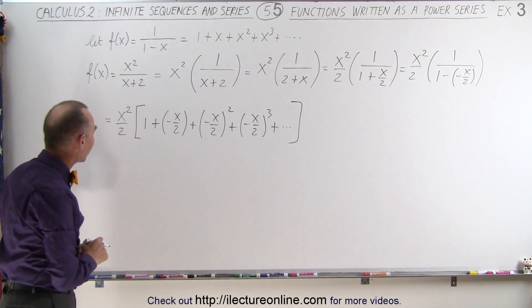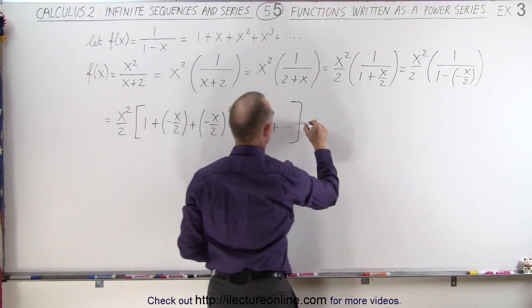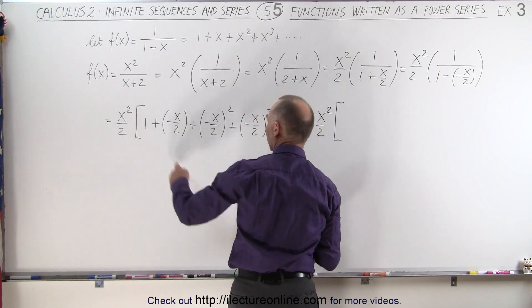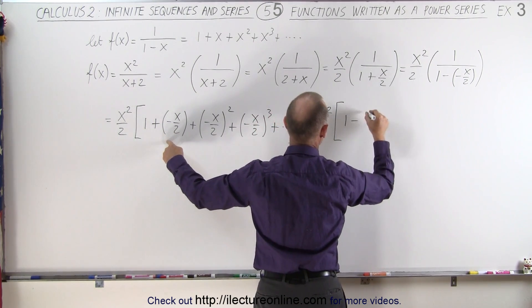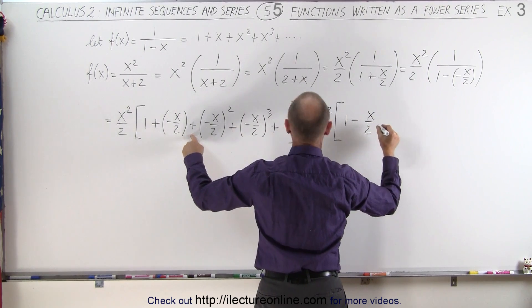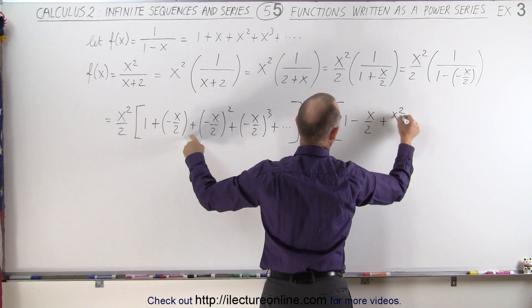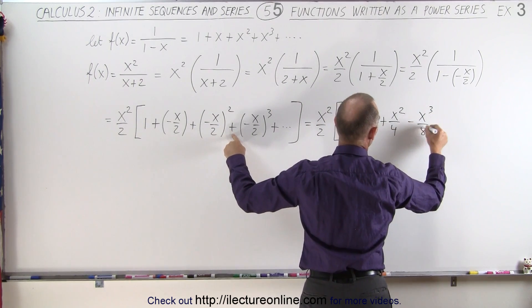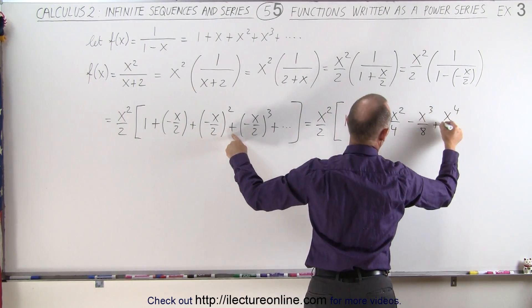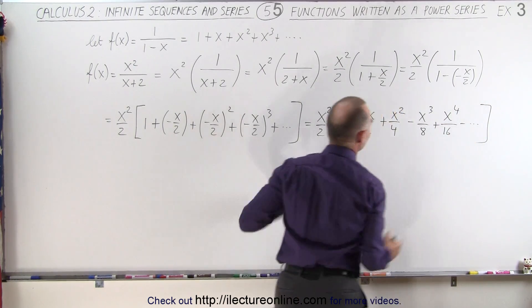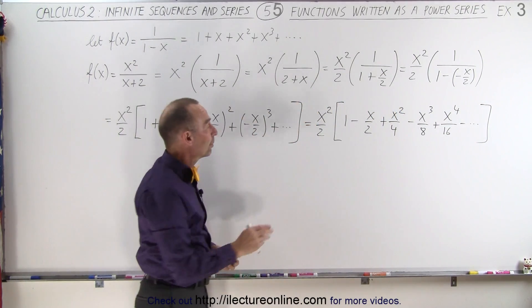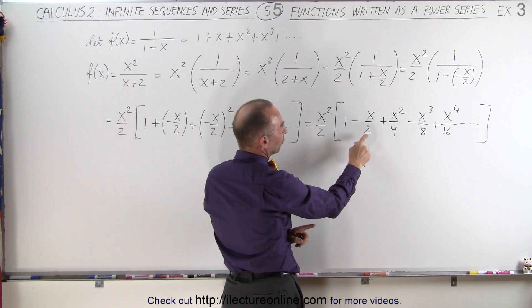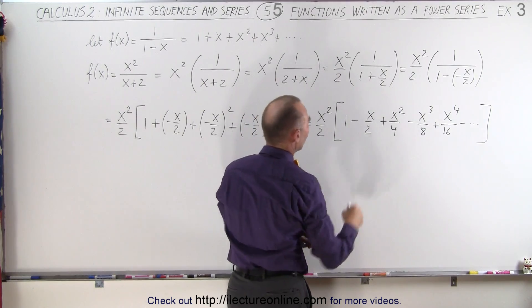And if we multiply that out, let's see what we get. This equals x squared divided by 2 times 1 minus x over 2 plus x squared over 4 minus x cubed over 8 plus x to the fourth over 16 minus and so forth. Now what we should do is write this as 2 to the first, 2 to the second, and so forth.